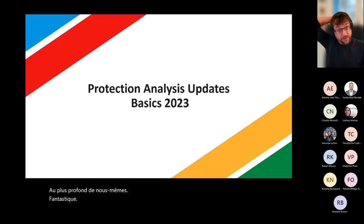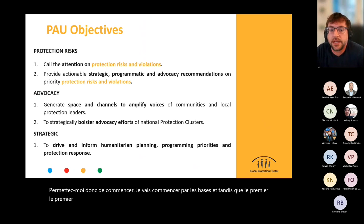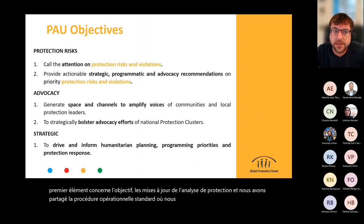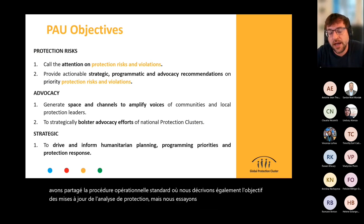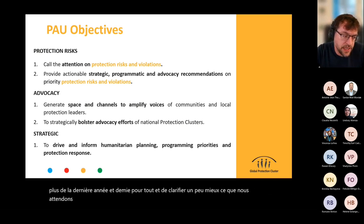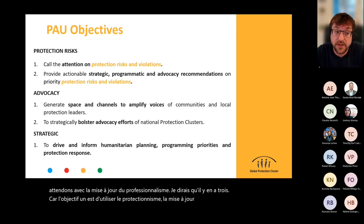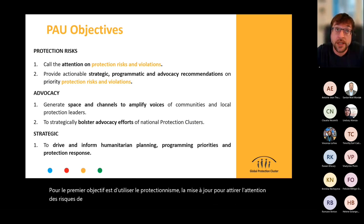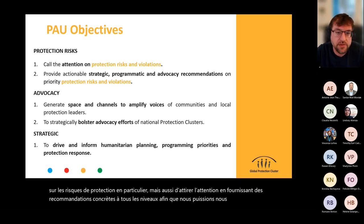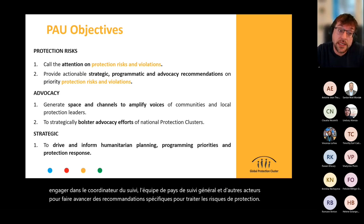Let me start from the basics. The first element is about the objective of the protection analysis updates. We shared the standard operating procedure where we outlined the objectives, but we tried to learn from the last year and a half and clarify better what we expect. There are three core objectives. The first is to use the protection analysis update to call attention on protection risks specifically, and to provide concrete recommendations at every level, so we can engage the Humanitarian Coordinator, the humanitarian country team, and other actors in pushing forward specific recommendations to address protection risks.